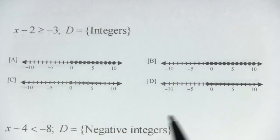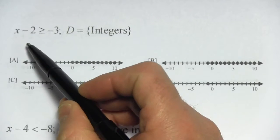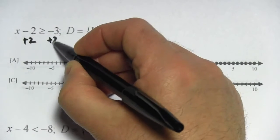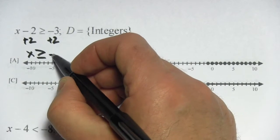All right, let's look at this next one. So we've got x minus 2 is greater than or equal to negative 3. We've got some adding to do to solve for x. Let's add 2 and do that right away. So we've got x is greater than or equal to negative 1.